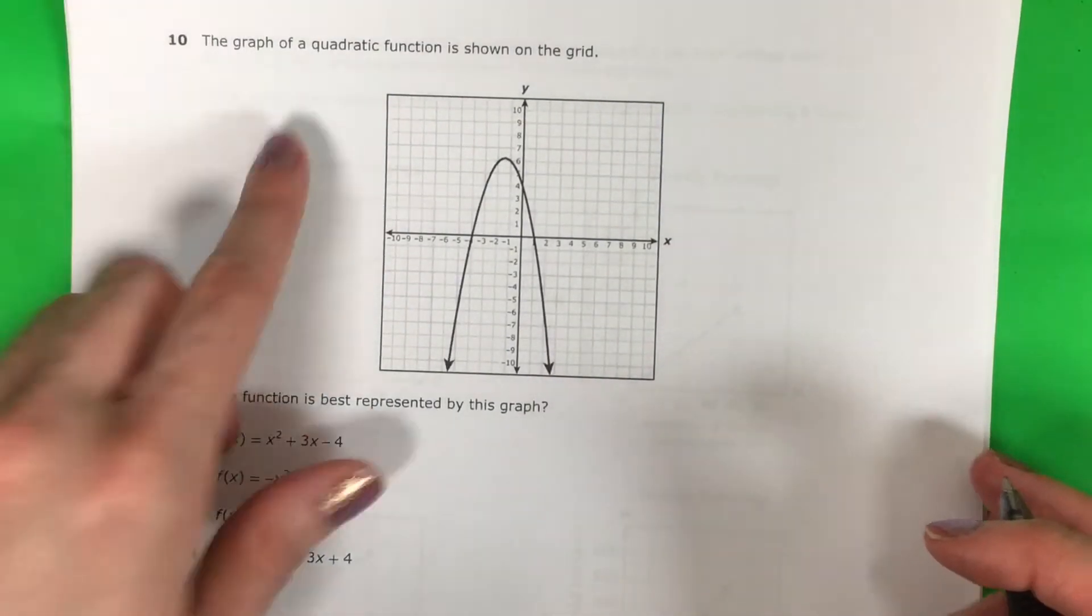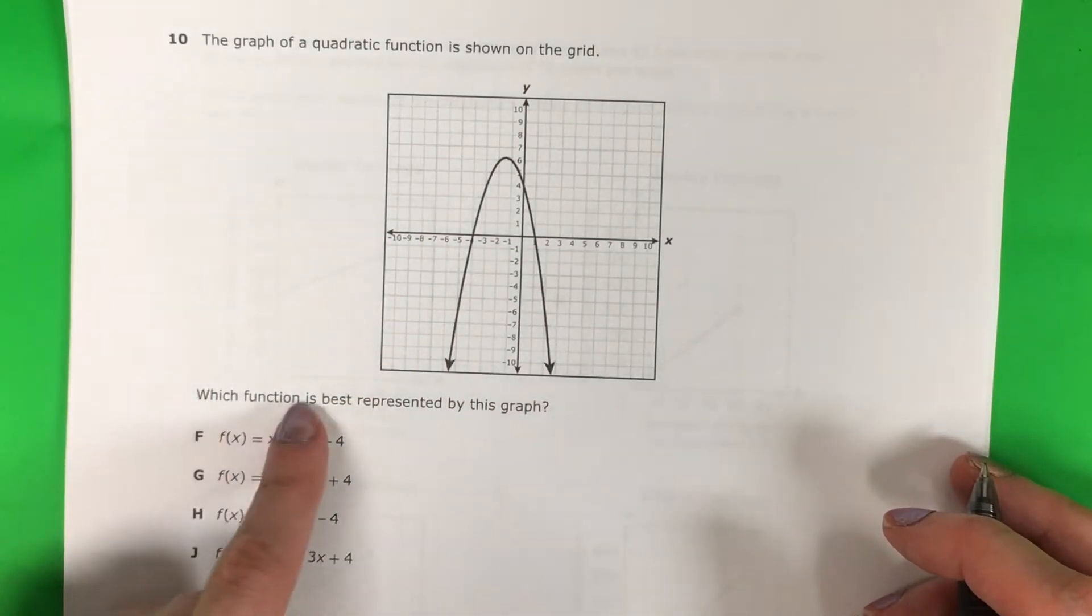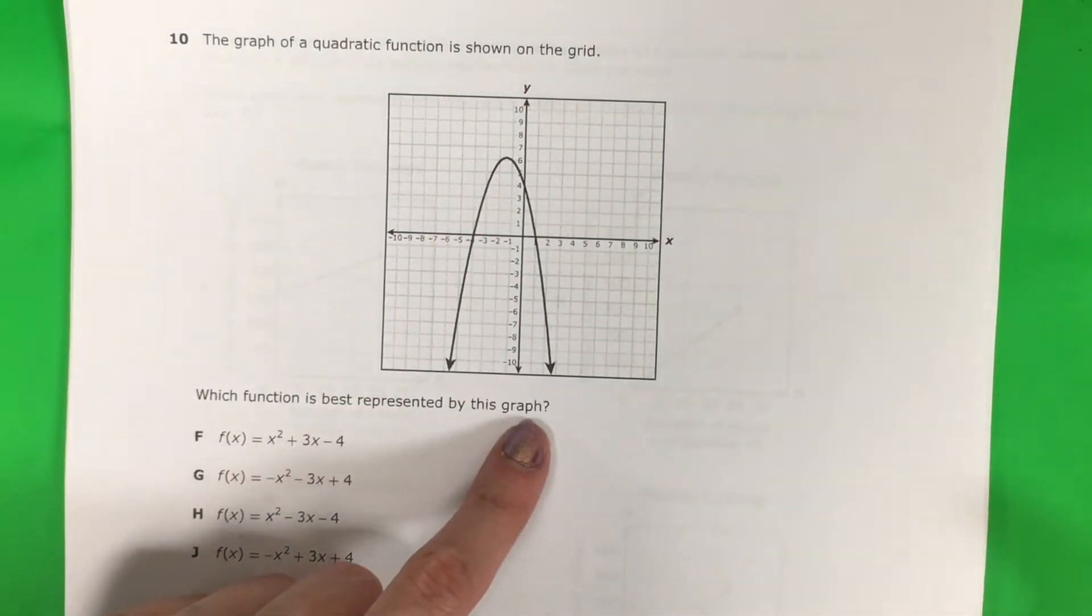Question 10. The graph of a quadratic function is shown on the grid. Which function is best represented by this graph?